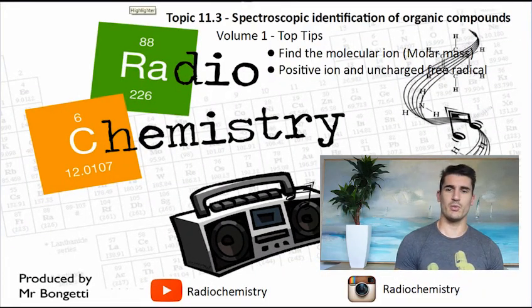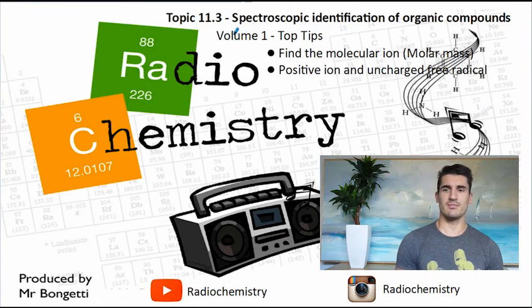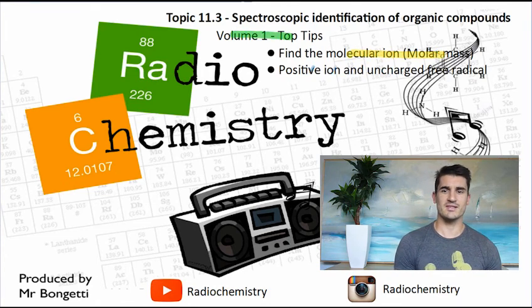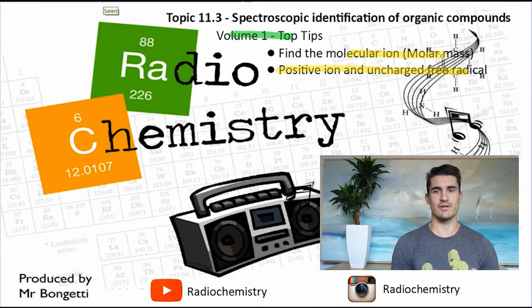Some top tips for volume one: make sure you know the molecular ion because that's the one that's going to give you a clue to the molar mass. We always form a positive ion and an uncharged free radical. Thanks for watching guys. Don't forget to drop a like on the video, subscribe if you're new, and that compound that they found on the banknotes - that was actually cocaine. Hope you thought about that, and I'll see you next time.